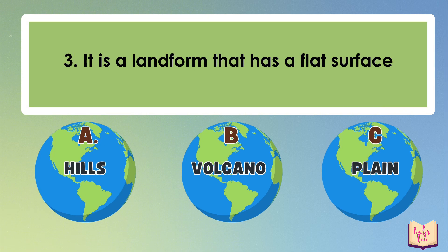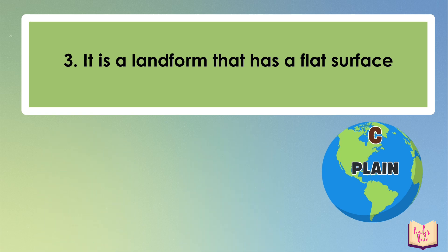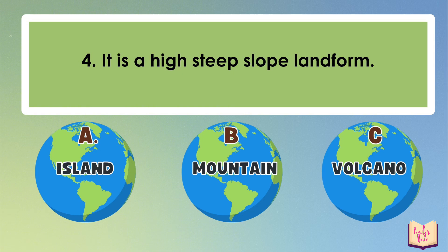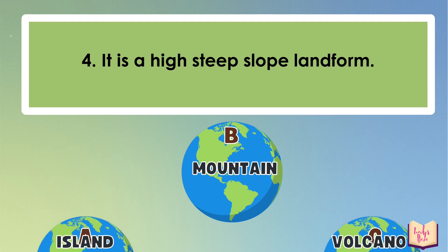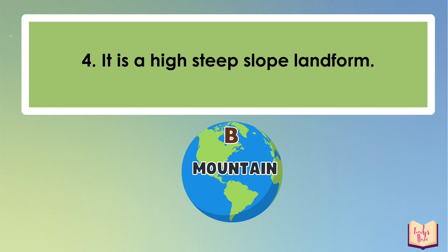Number 3: It is a landform that has a flat surface. A. Hills. B. Volcano. C. Plain. The correct answer is plain. Number 4: It is a high steep slope landform. A. Island. B. Mountain. C. Volcano. The correct answer is letter B, Mountain.